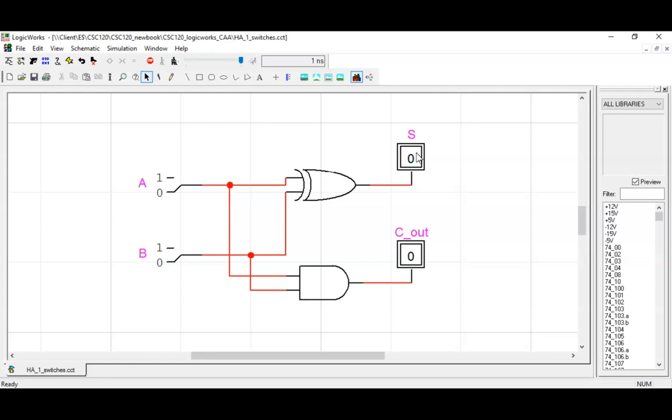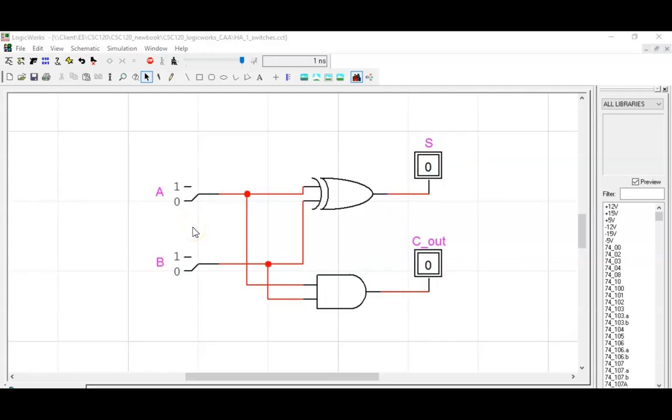This half adder simply adds together two bits. So when we add zero plus zero, the result should be zero zero, as seen here on the outputs. Zero plus one should be zero one. I flip the B value to one, and the results are what is expected.